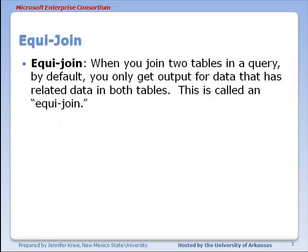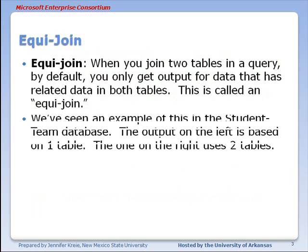An equi-join is when you join two tables. By default you get output for data that has only got data related in both tables and this is called an equi-join.